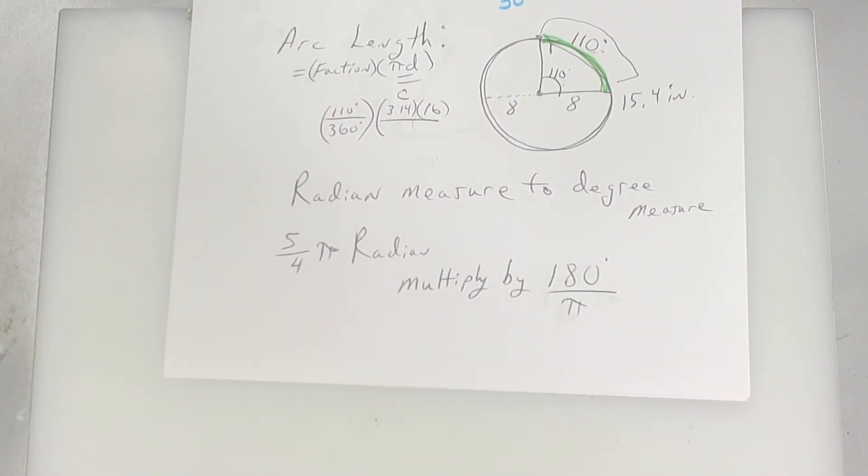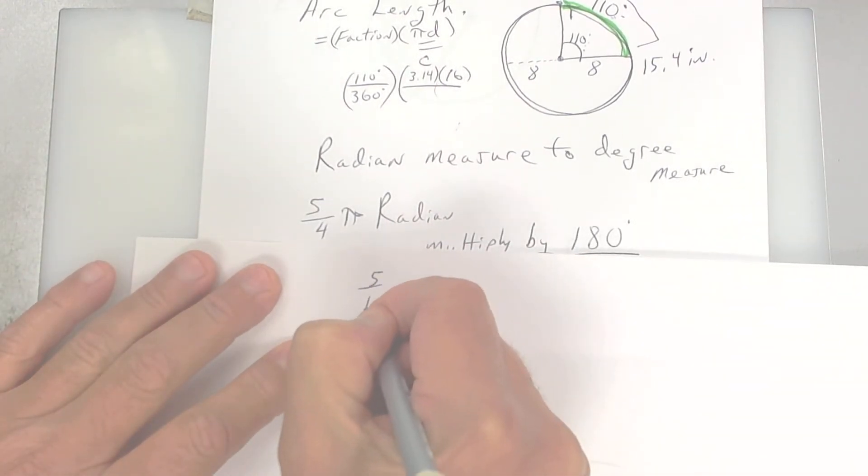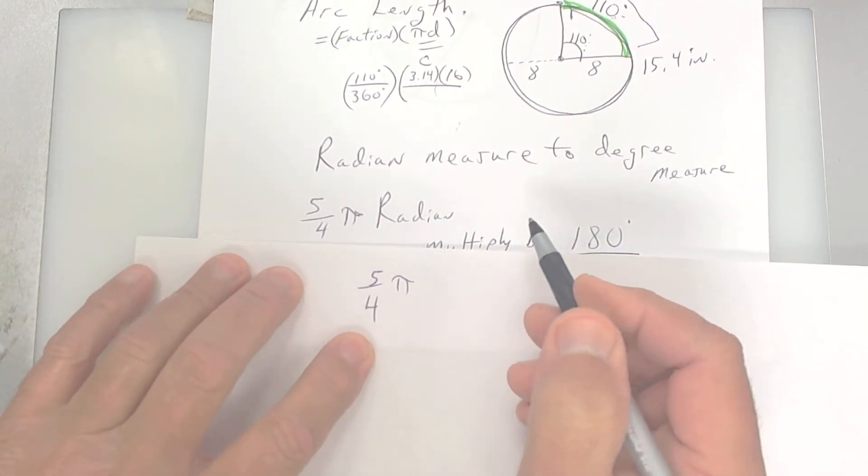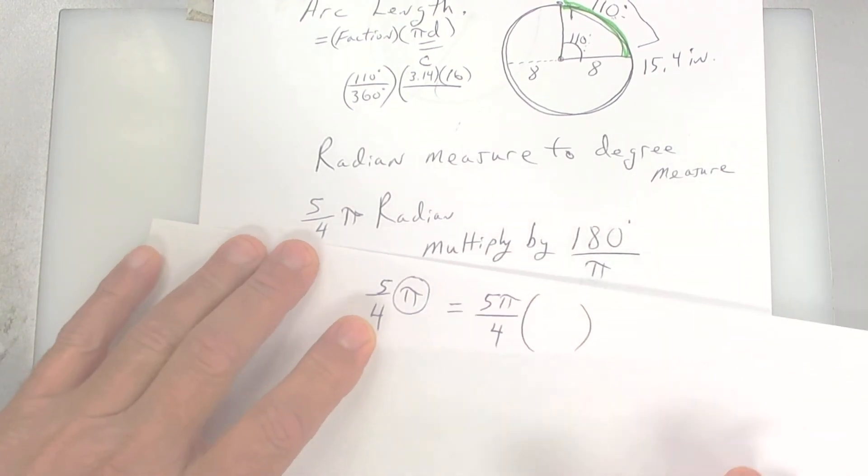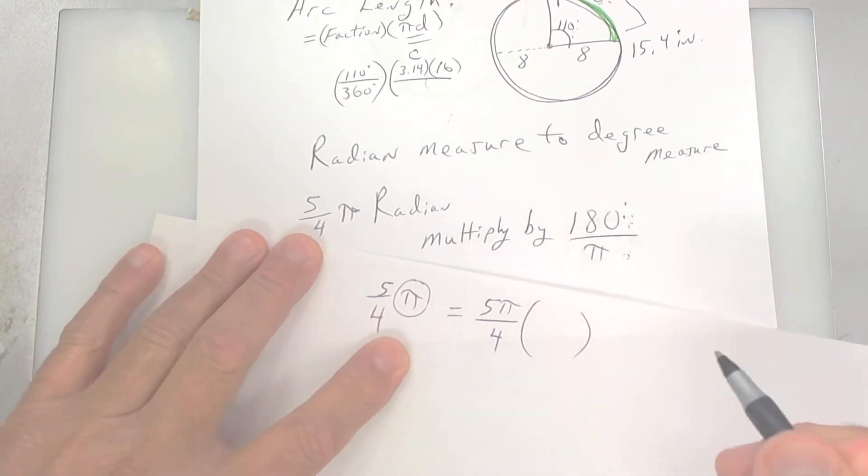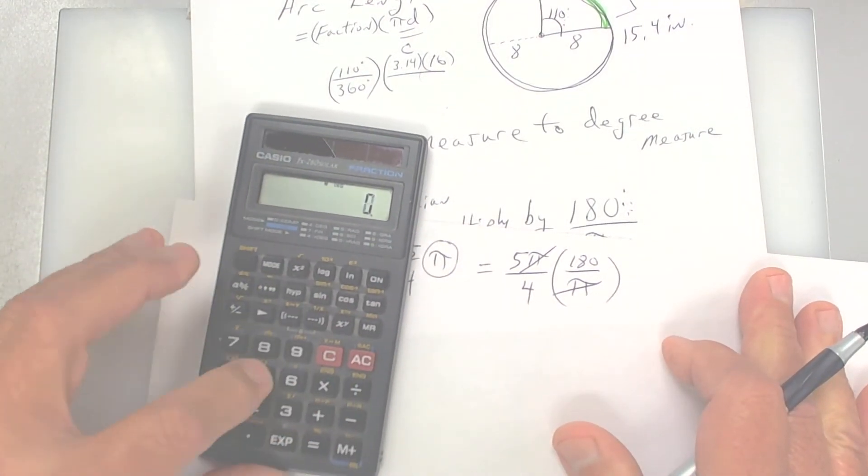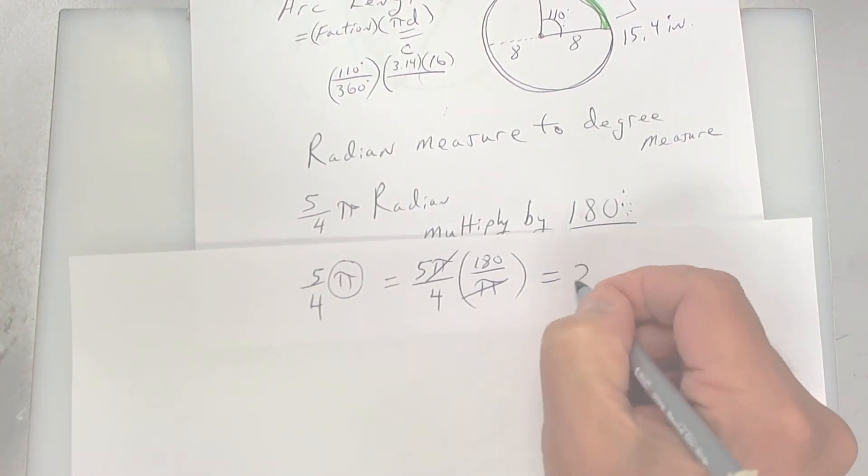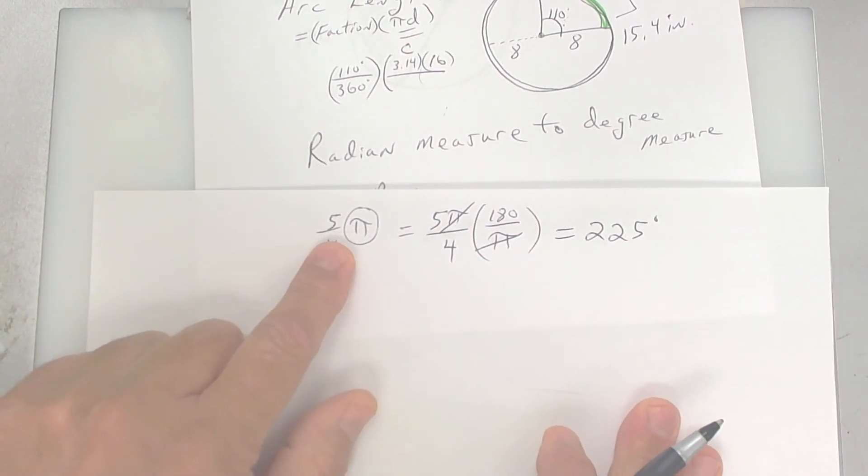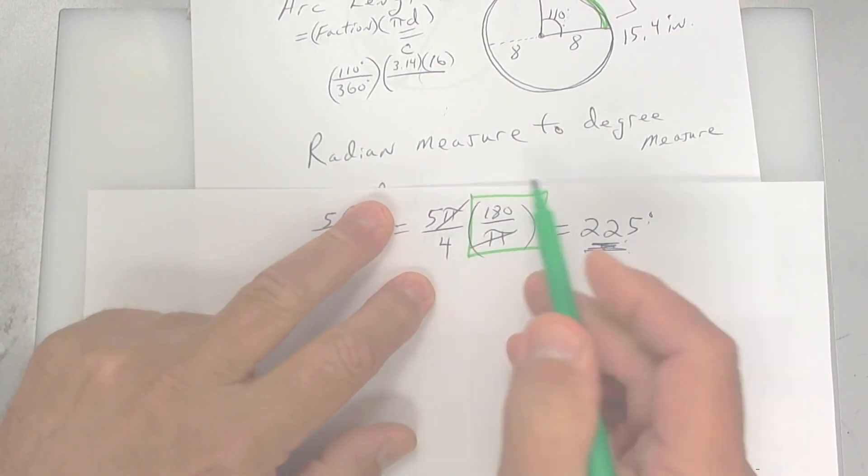All right. There's something called radian measure. Now, we don't use radian measure too much, but they do want you to know a little bit of it. So let's say they give you 5 over 4 pi. You know it's radian measure because it's written in pi. So the pi goes at the top. So it's 5 pi over 4, and then you want to multiply by this right here. This converts it to degrees. So if you multiply by 180 over pi, the pi is canceled. So if you take your calculator and you take 5 times 180, divide it by 4, then you get 225 degrees. So if they give you radian measure, you have to convert it to degrees. And how do you convert it? You use 180 over pi. So write that down. Convert.